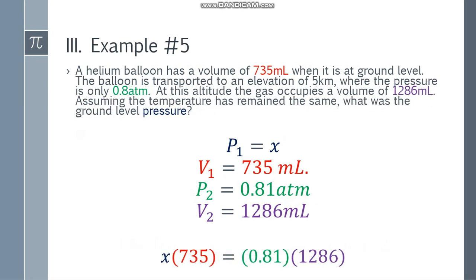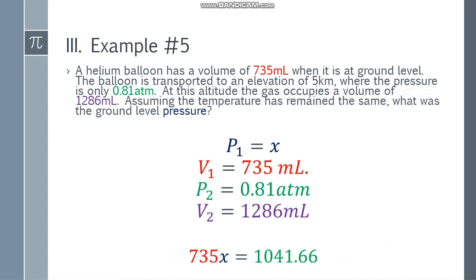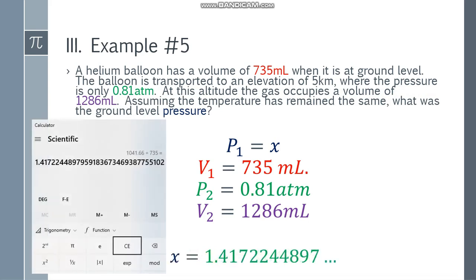Substituting: x times 735 equals 0.81 multiplied by 1286. Simplifying: 735x equals 1041.66. Dividing both sides by 735, x equals 1.41722 and so on.